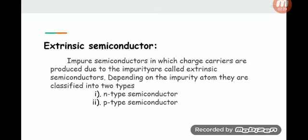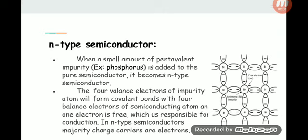N-type semiconductor: When a small amount of pentavalent impurity like phosphorus is added to the pure semiconductor, it becomes n-type semiconductor. The four valence electrons of impurity atom form covalent bonds with four valence electrons of semiconducting atom, and one electron is free, which is responsible for conduction. In n-type semiconductors, majority charge carriers are electrons.